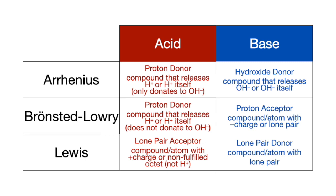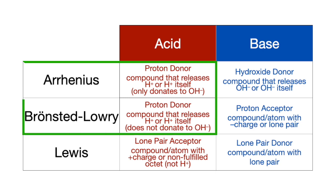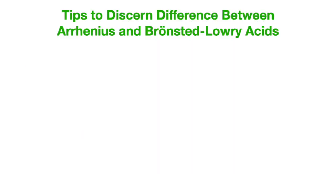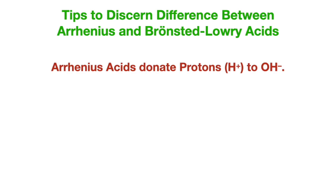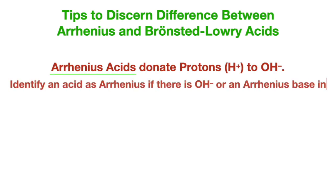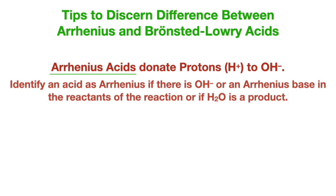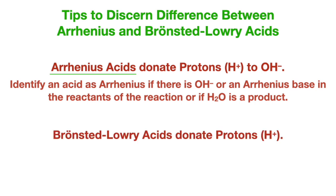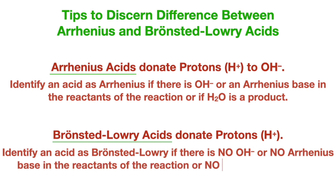It's important to know the difference between Arrhenius and Bronsted-Lowry acids because both are proton donors. Arrhenius acids donate protons to hydroxides, so hydroxide must be in the reaction, whereas Bronsted-Lowry acids donate protons to other molecules, so there will not be any hydroxide in the reaction.